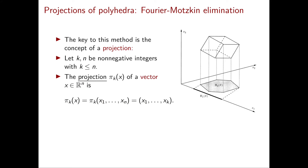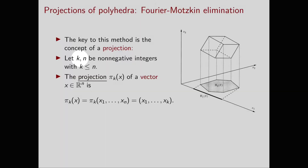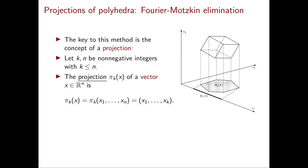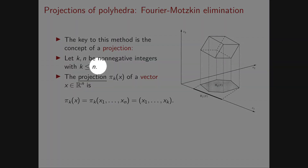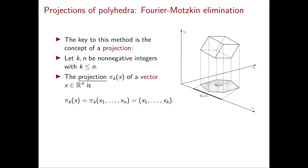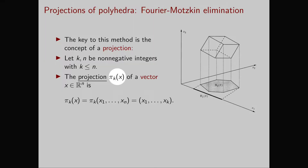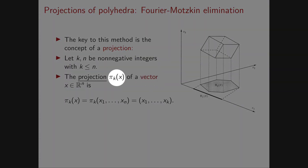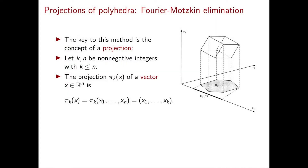We're going to first define the projection of a vector and then the projection of a set. So let's pick two non-negative integers k and n with k less than or equal to n. You should think of n as your original dimension and k the dimension where the projection lives. So in the example on the right, we have n equal to 3 and k equal to 2. Now the projection of a vector x, which we denote by pi_k of x, is simply defined as the sub-vector of x that contains only the first k components, so we just drop the components k+1, k+2 until n.